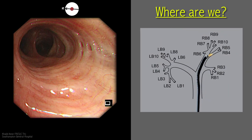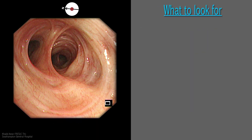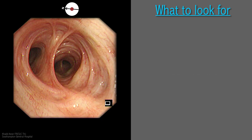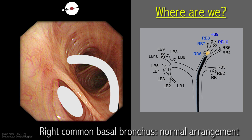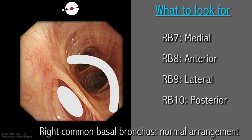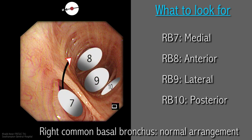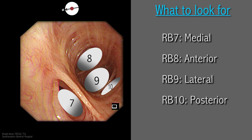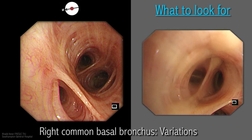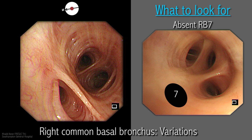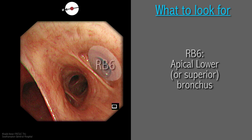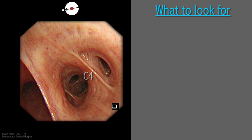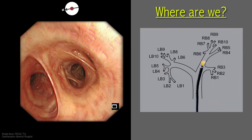The middle lobe bronchus divides into two segmental bronchi: the lateral RB4 and the medial RB5. Moving to the common basal segments of the right lower lobe, one should expect a crescent of three orifices separated by a sharp carina from a single orifice facing its concavity. These four orifices are named clockwise: medial basal RB7, anterior basal RB8, lateral basal RB9, and posterior basal RB10. Divisions of the common basal segments show great variation, the commonest being absence of RB7 and two sets of double divisions. On proximal withdrawal, the takeoff of apical segment RB6 should be seen separated by a sharp quaternary carina from the common basal segments. This concludes examination of the right side of the tracheobronchial tree.